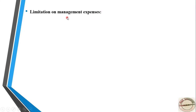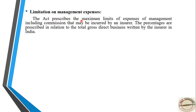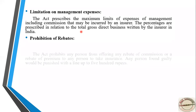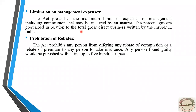Moving forward, the next provision is limitation on management expenses under Section 40. Under this section, the act prescribes the maximum limit of expenses of management, including commission, that may be incurred by an insurer. The percentages are prescribed in relation to the total gross direct business returned by the insurer. This act also prohibits any person from offering any rebate of commission or rebate of premium to any person to induce them to take insurance.